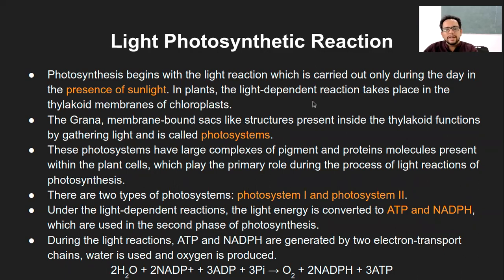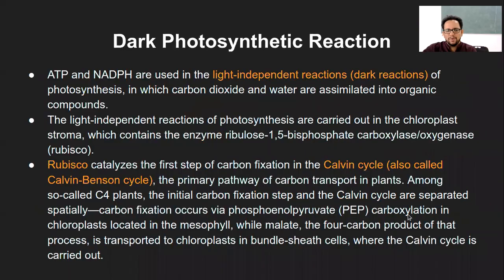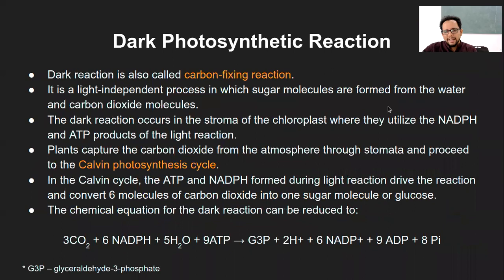A small part of the dark photosynthetic reaction was remaining. So again, when sunlight falls onto the chloroplast, it will be taken up by the chlorophyll pigments. Those chlorophyll pigments will cause the release of electrons, and these electrons will be utilized for the generation of energy molecules — ATP and NADPH. That was the first part of the reaction called the light photosynthetic reaction, which goes via photosystem one and photosystem two.